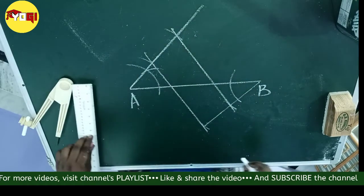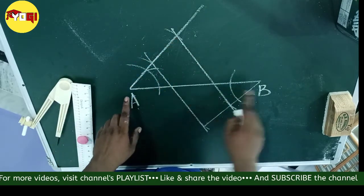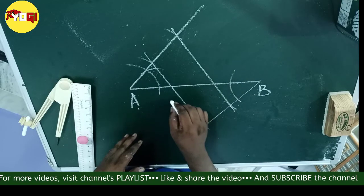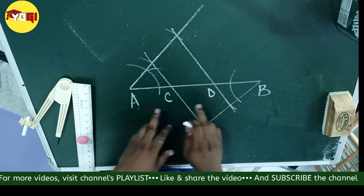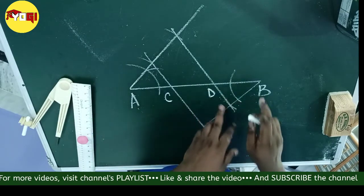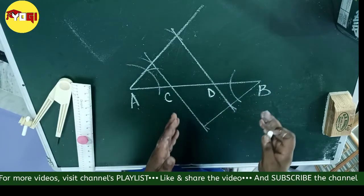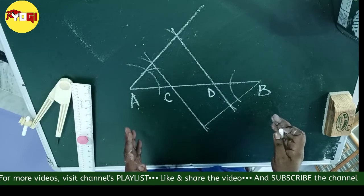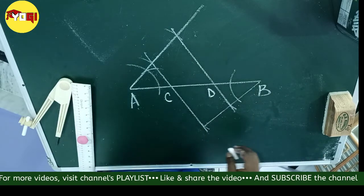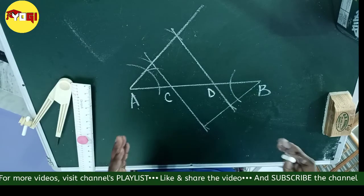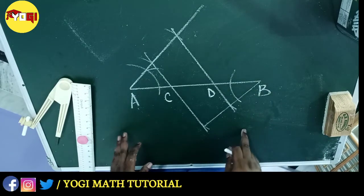These two lines intersect the given line segment at points C and D. If we measure AC, CD, and BD with a scale we find these three portions are equal in length. This is the procedure to divide a line segment into three, five, or seven equal parts.